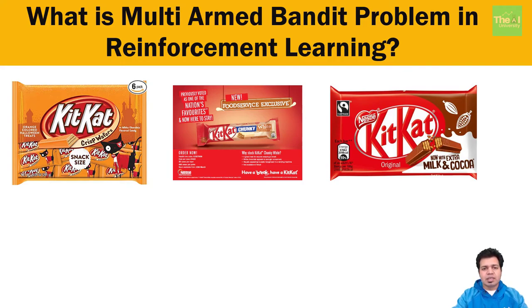We assume there is a distribution behind each ad because when the ad is presented to a customer they will either click on it or not. With hundreds of thousands of customers taking such actions, we get some kind of distribution or bell curve for each ad. The whole aim is selecting the best bandit out of a group of bandits.